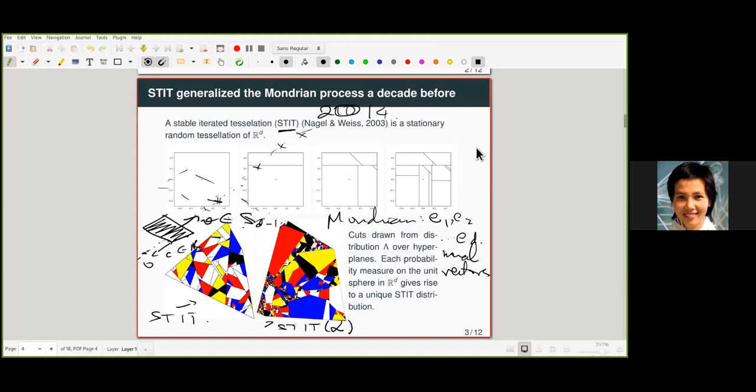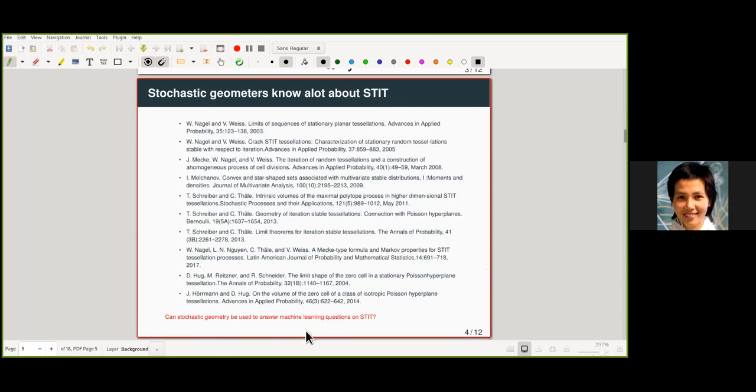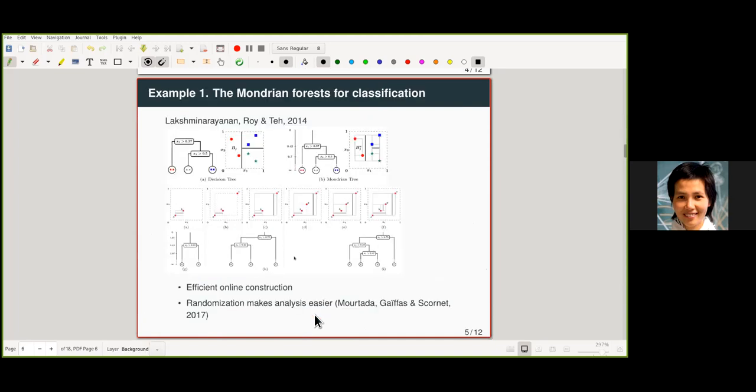But we could prove things with how to connect machine learning. And that is the main theme of my talk today. So stochastic geometers know a lot of stable iterated tessellation. There are many papers over the last 10 years. And so the key question is, can stochastic geometry be used to answer questions stemming from machine learning about the Mondrian process and its generalization?